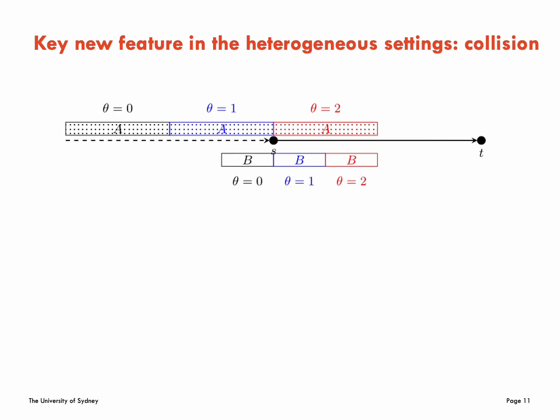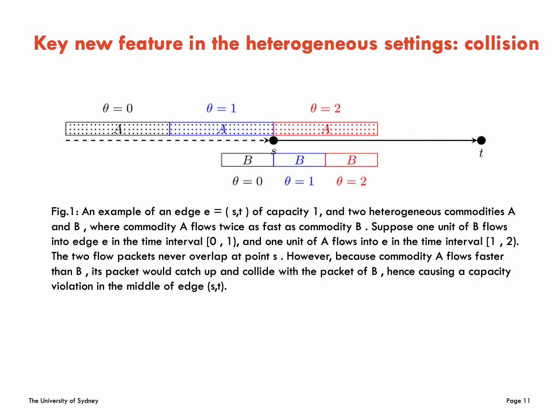Here is an example. Figure 1 shows that two heterogeneous commodities A and B where commodity A flows twice as fast as B. Suppose one unit of B flows into edge e in the time interval 0 to 1, and one unit of A flows into e in the time interval 1 to 2. The two flow packets never overlap at point A. However, because commodity A flows faster than B, its packet would catch up and collide with the packet of B, hence causing a capacity violation in the middle of edge s to t.